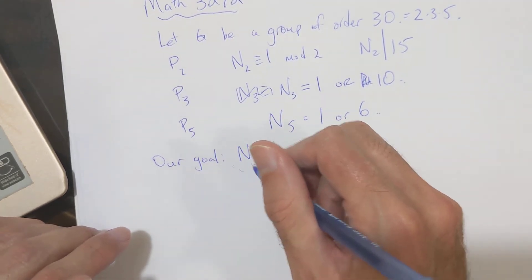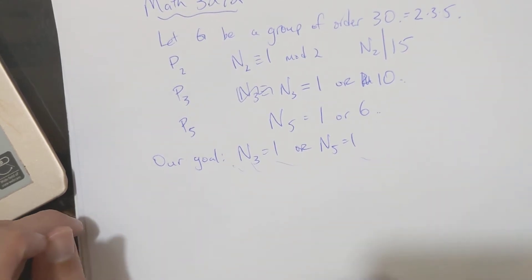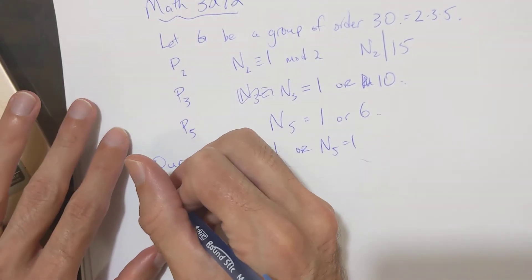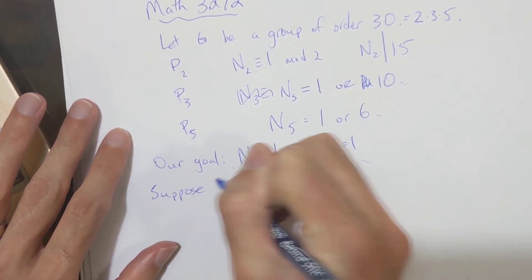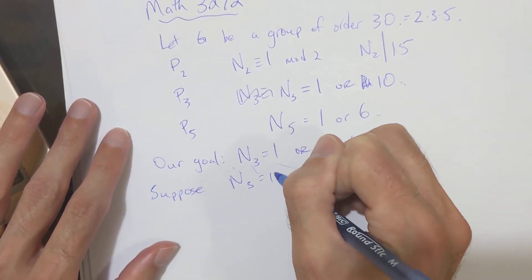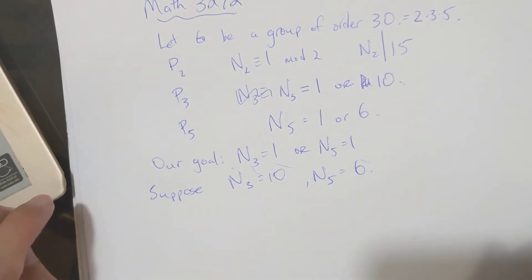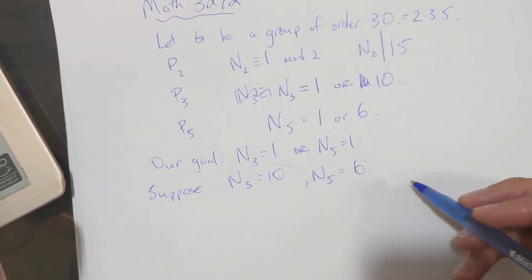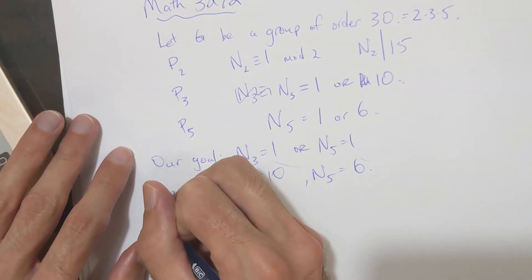Okay. So, our first step is to show one of these, and then we'll see how we can construct this group of order 15. Okay. So, for a contradiction, suppose N3 equals 10, and N5 equals 6, and now let's count the number of elements of order 3 and the number of elements of order 5 in G.